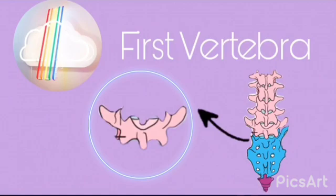First lumbar vertebra: its upper articular processes present a concave articular facet, facing back and inside. Its lower articular process presents a convex articular facet and looks forward and outward, like the T12, so it is very easy to confuse it with the T12 vertebra.